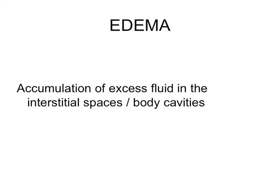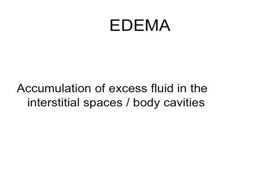Some other terms you've got to learn: when the fluid accumulates in a body cavity we talk about an effusion. So if you have fluid accumulating in the pleural cavity it's a pleural effusion; pericardium, it's a pericardial effusion. This is a curve ball — in the peritoneum we rarely speak of peritoneal effusion; we speak of ascites. Got to know that word. Another word you've got to know is anasarca — that's generalized edema. You have a patient who comes in puffy everywhere: edema in the lower extremities, pleural effusions, maybe some ascites, waterlogged totally — that is anasarca.